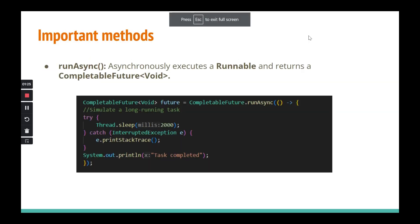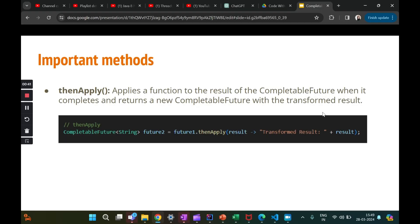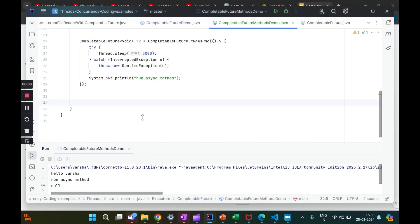We've completed `supplyAsync` and `runAsync`. The next method is `thenApply`. As the name suggests, you want to apply some kind of transformation — it applies a function to the result of the CompletableFuture when it completes and returns a new CompletableFuture. This addresses a limitation we discussed with the plain Future interface: if you want to do some transformation after a previous future's work completes, plain Future couldn't do that. Because it's a CompletableFuture, this becomes possible. When future one is complete, then apply something.